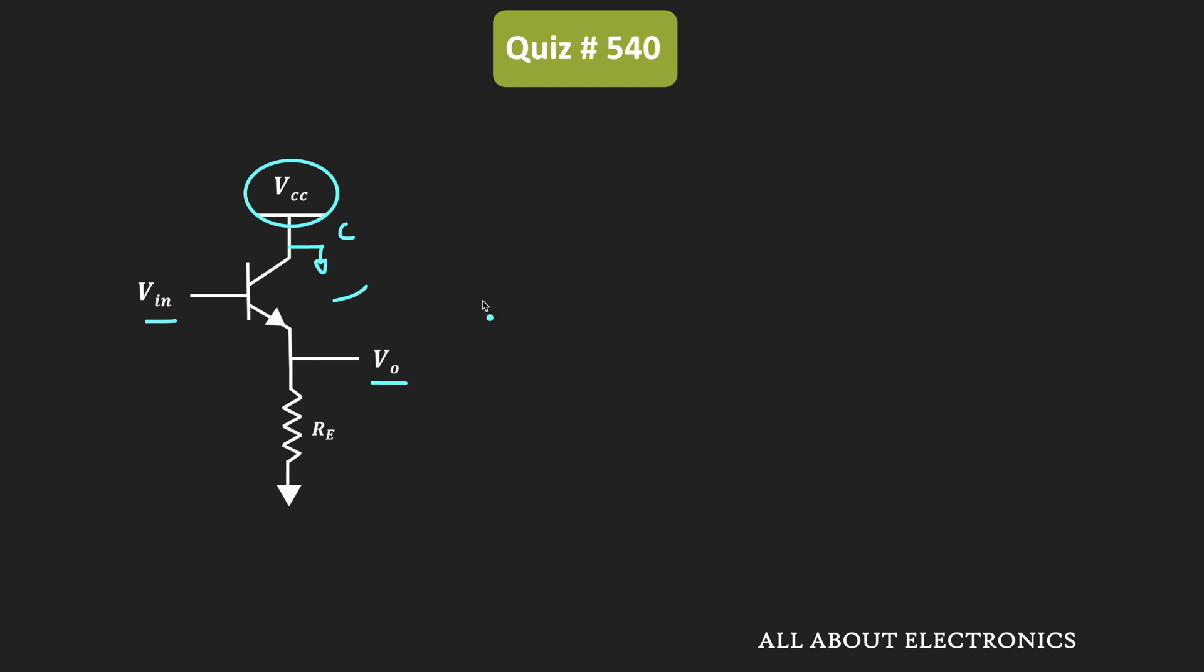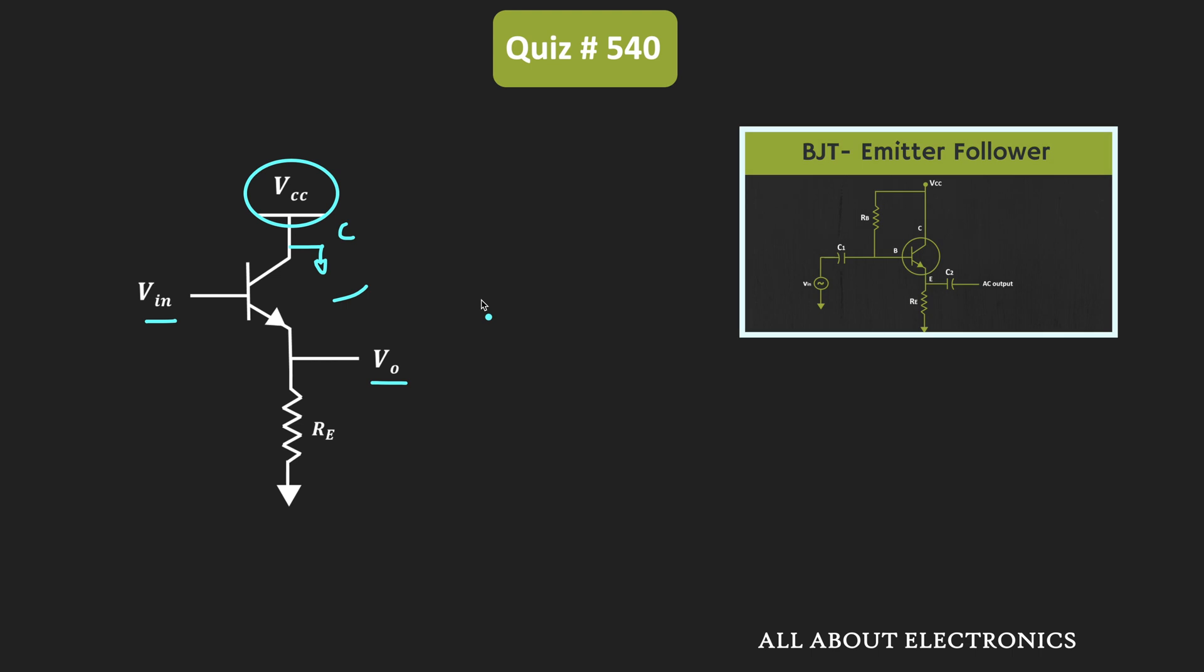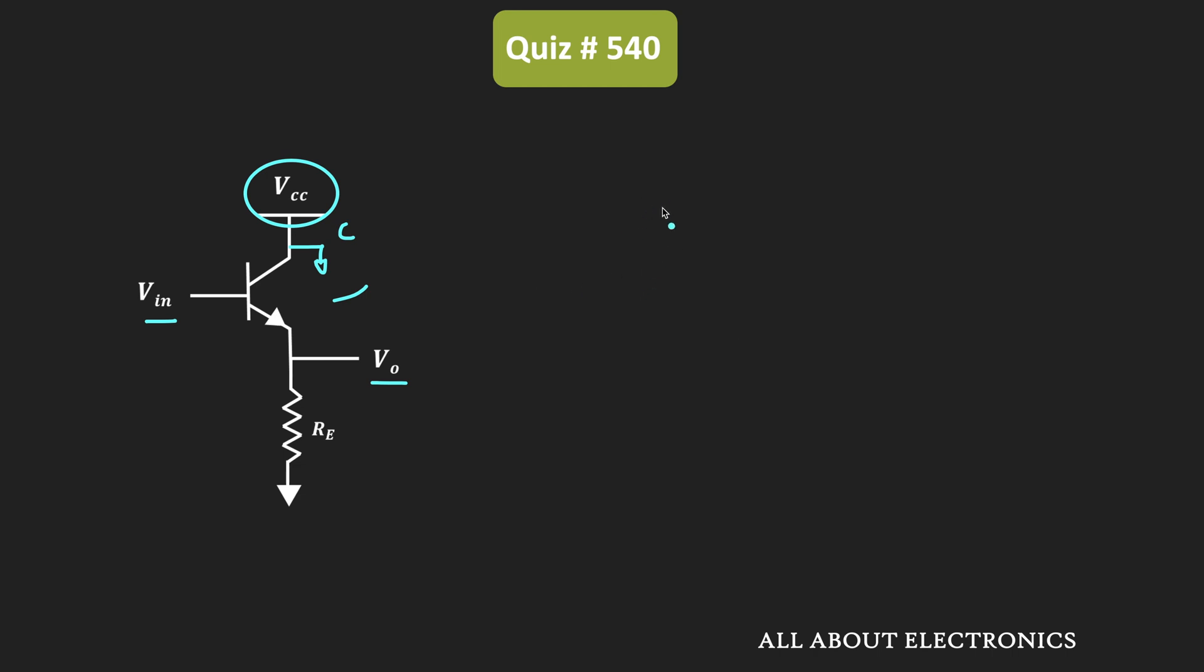On the main channel, we have already seen how to do the small signal analysis of this common collector amplifier. In that video, we have seen how to derive the voltage gain for this common collector amplifier. The voltage gain can be given as gm times Re divided by 1 plus gm times Re.